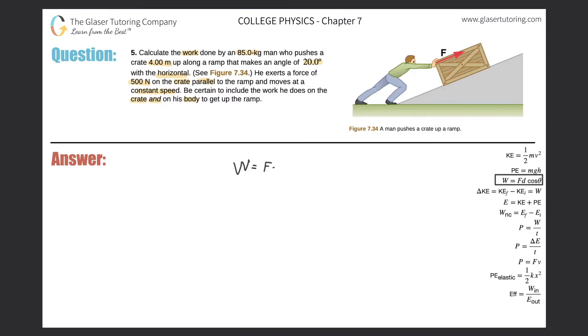Work is equal to Fd cosine theta. If I want to find the work done on the crate, then I need to know the force applied to the crate, the distance the crate travels, and then the angle between that force vector and that distance vector.